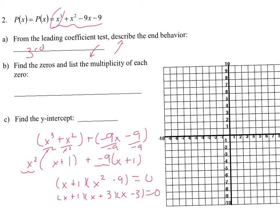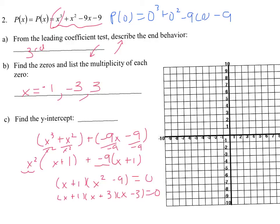Now that it's completely factored, find your zeros from each group. The first group gives X equals negative 1, one time. X equals negative 3 once, and X equals positive 3 one time — all multiplicity one. For the Y intercept, plug in 0 for X: 0 cubed plus 0 squared minus 9 times 0 minus 9. All the zero terms drop away, leaving negative 9. So P of 0 equals negative 9, and the Y intercept is (0, negative 9).